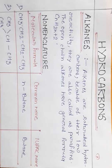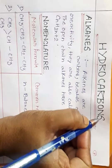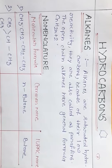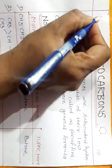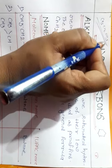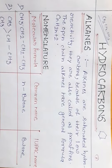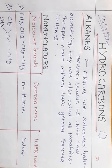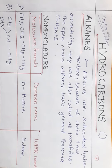Now, what is open-chain hydrocarbon? It is also called acyclic hydrocarbon. Acyclic means there is no cyclic ring present in the compound — for example, CH3, CH2, CH3 type compounds are acyclic hydrocarbons. They contain open chains of carbon atoms in their molecules. Open-chain hydrocarbons are also called aliphatic hydrocarbons, which we study in three parts: alkanes, alkenes, and alkynes.